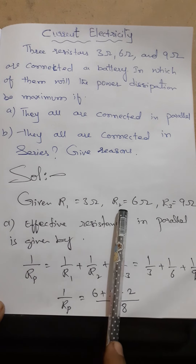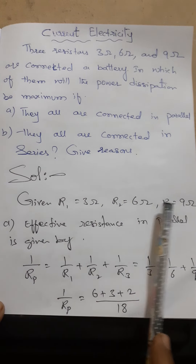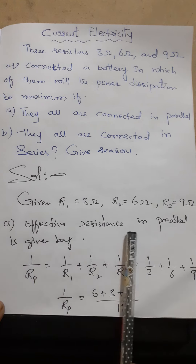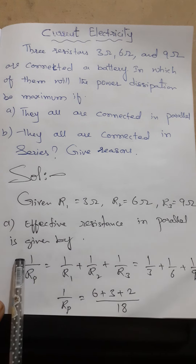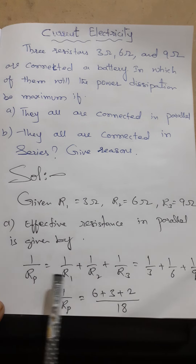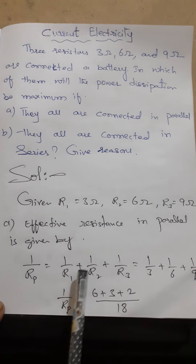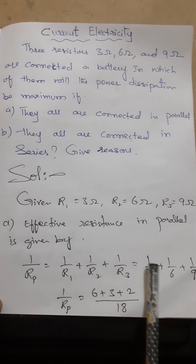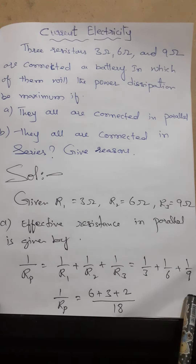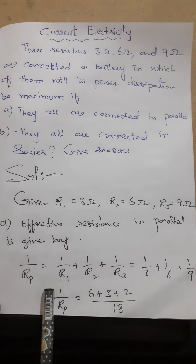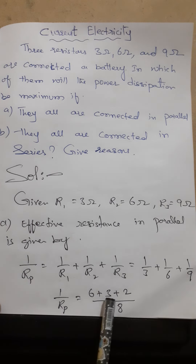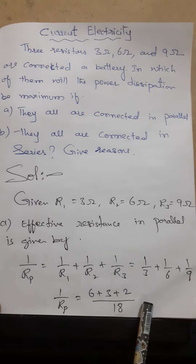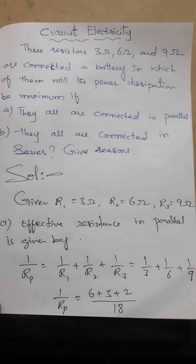The given values are R1 = 3, R2 = 6, R3 = 9. We know the formula for effective resistance in parallel is: 1/Rp = 1/R1 + 1/R2 + 1/R3. This can be written as 1/3 + 1/6 + 1/9. Taking the LCM, 1/Rp = (6 + 3 + 2) / 18.